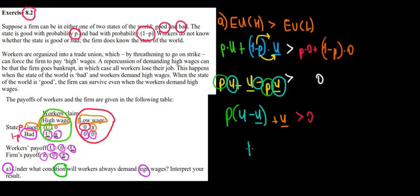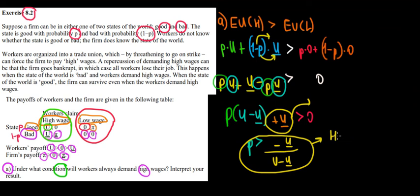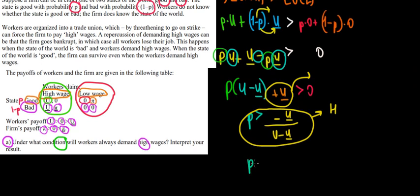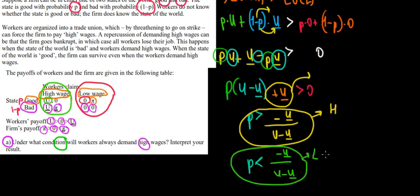Solving for P: move U-bar to the right side, giving P times (U minus U-bar) greater than minus U-bar, so P must be greater than minus U-bar divided by (U minus U-bar). Under this condition the workers will claim high wages. If the opposite holds — P is less than that expression — then the expected utility of low wages is higher and they will claim low wages instead.